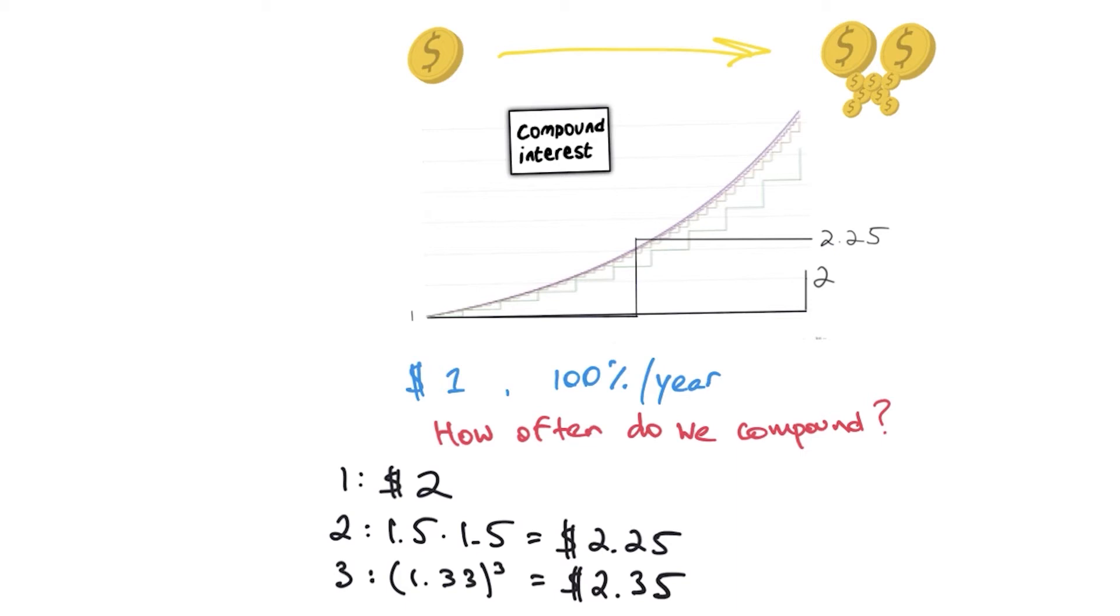So let's say you do it 10 times like the green line here. What would you have at the end of the year? It would be 1.1 to the 10th power. So you would have $2.59. So if you do this infinitely, if you collect interest all the time, like literally every nanosecond, you would have e dollars at the end of the year. That's the magic number.